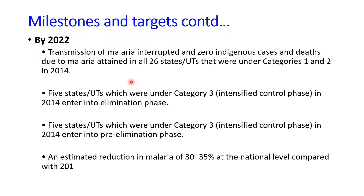By 2022, the target was to interrupt transmission of malaria and achieve zero indigenous cases and zero deaths due to malaria in all 26 states/UTs that were under Category 1 and 2 in 2014. States were categorized into categories 0, 1, 2, and 3 based on their annual parasite incidence.